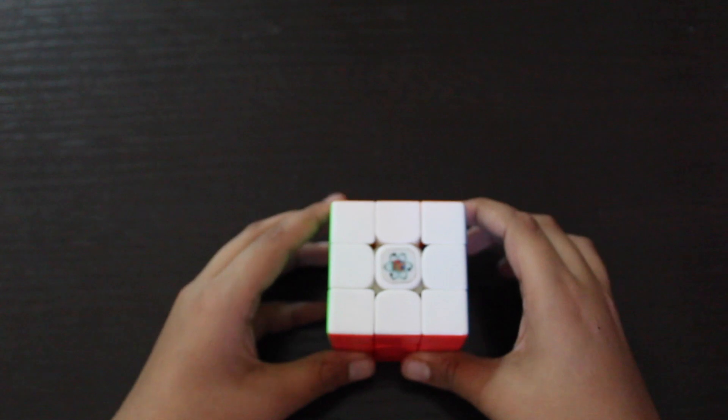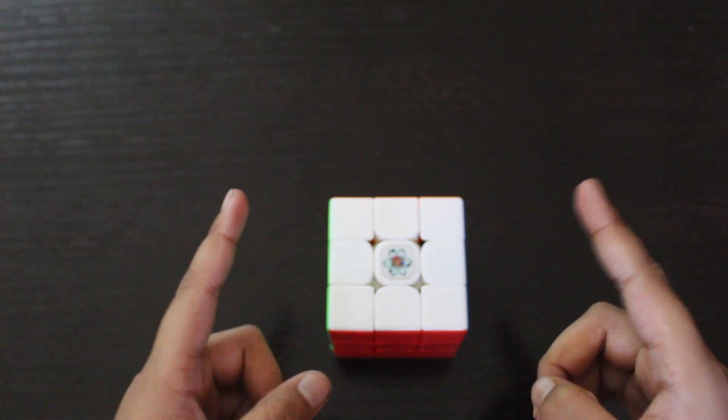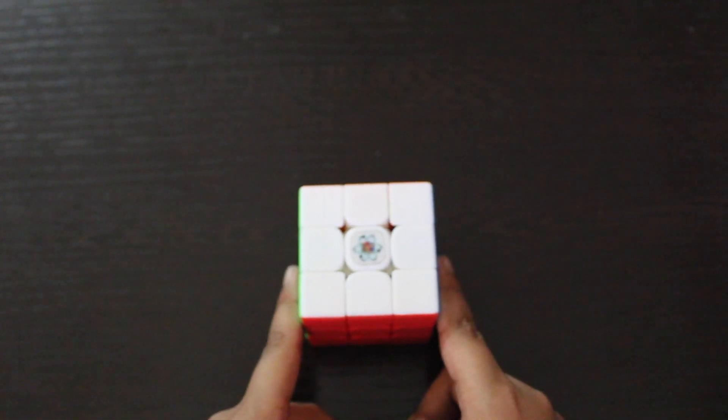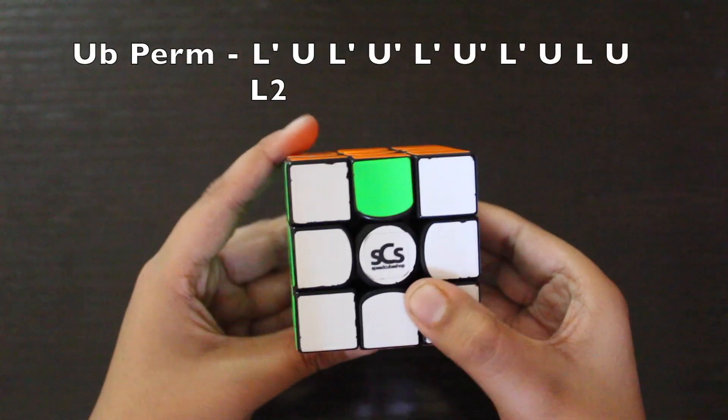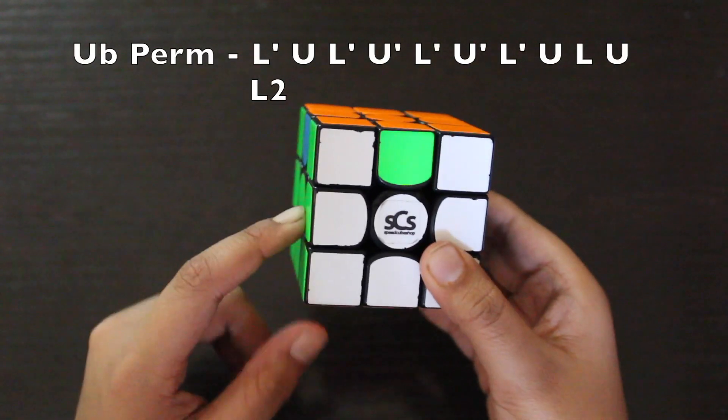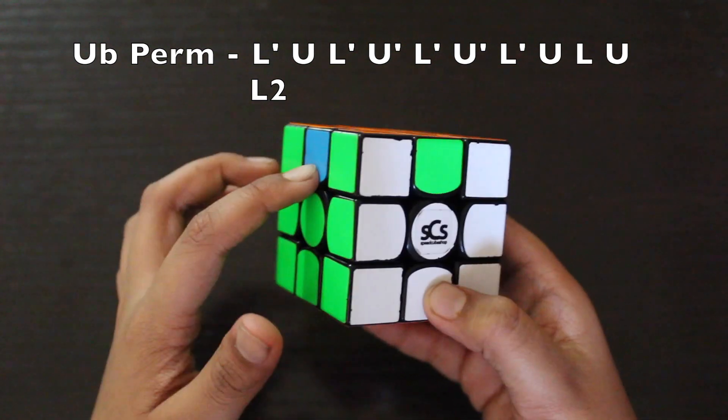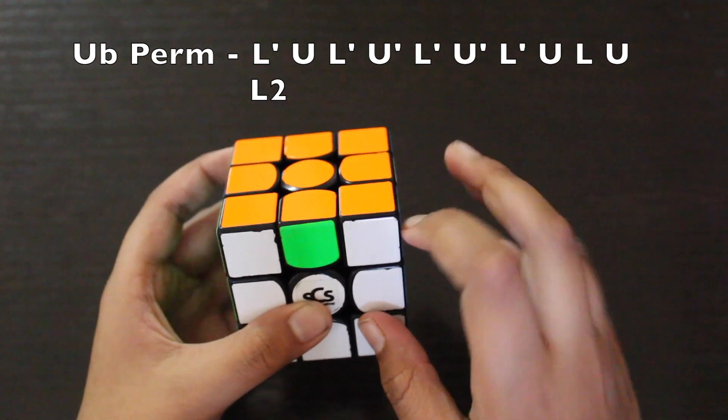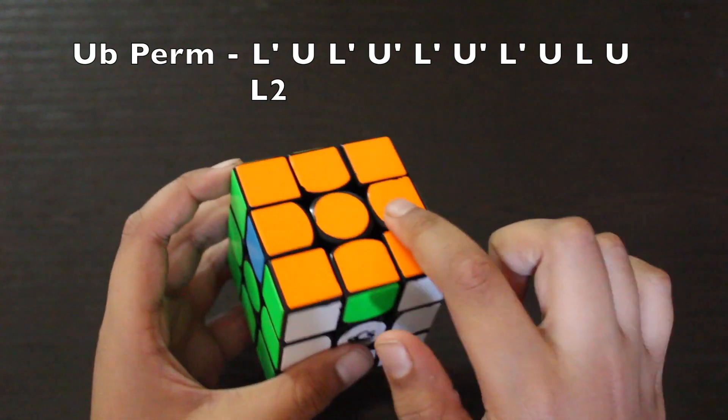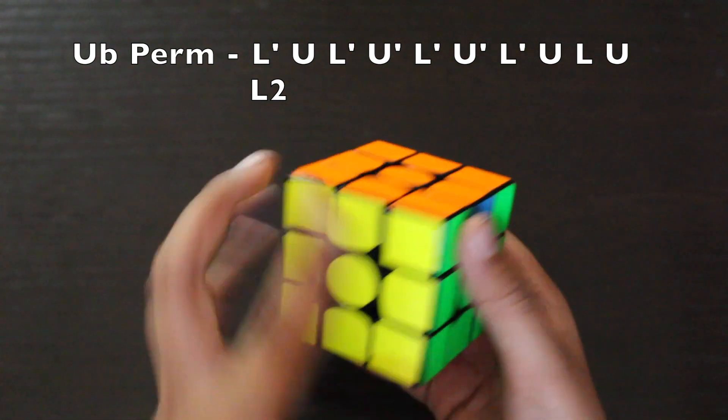The first EPL in this list is the UB perm. In the UB perm, this edge moves to the left and this also here, so there's a circulation like this of edges and there's a solved side at the back. This is the recognition and we just drill the algorithm this way. Now in slow motion.